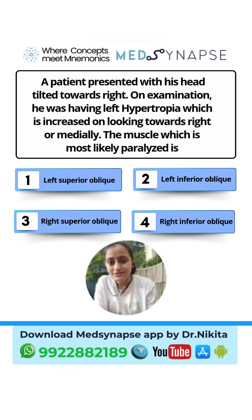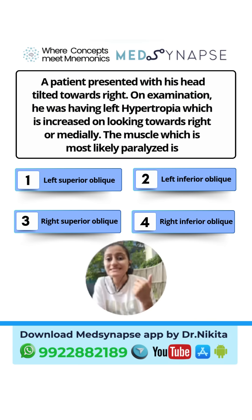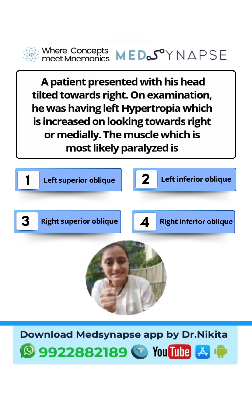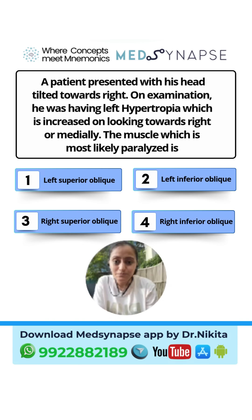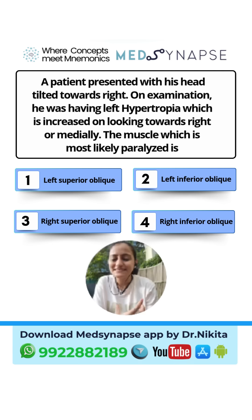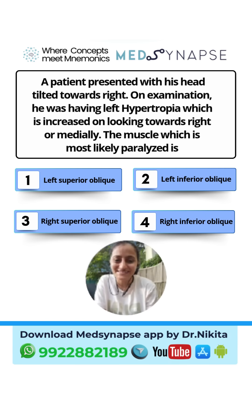Now we identify right or left superior oblique. The superior oblique is a depressor. Depressor — double S — means same side as the hypertropia. The hypertropia is on the left side, so the muscle affected is also the left side. The answer is left superior oblique. Practice questions on the PARC 3-step test and let me know if this trick helped. Thank you, and keep following for more such tricks and mnemonics with Dr. Nikita.